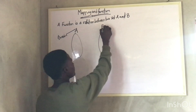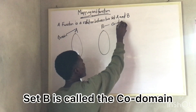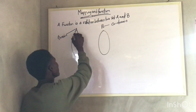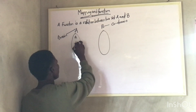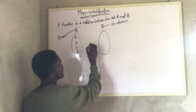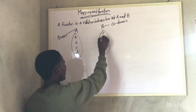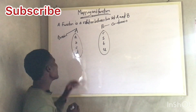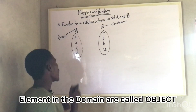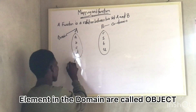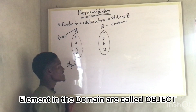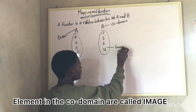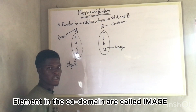And this B is called the co-domain. Now, elements in this — let's say I have elements A, B, C, and D in set A, and elements R, S, C, and U in set B. The elements in the domain are called objects, while elements in the co-domain are called images.